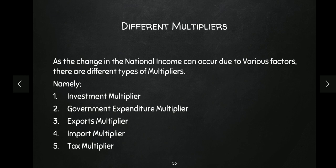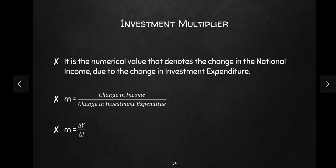Investment multiplier is simply the change in national income due to the change in investment. It is denoted by small m. m = change in income divided by change in investment expenditure, i.e., delta Y upon delta I — where delta Y means change in national income and delta I means change in investment expenditure. Now let's understand the concept and how it works.